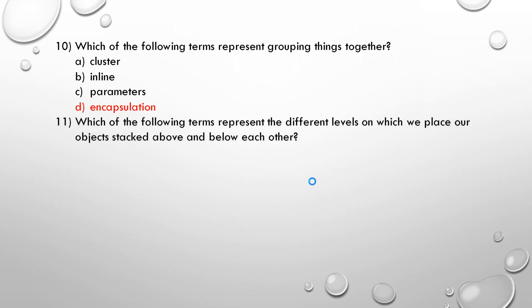Question number 11. Which of the following terms represent a different level on which we place our objects above or below each other? A. Layer. B. Frame. C. Parameter. D. Panel. Correct answer is layer. That represents the different level where we can place our object or any drawing.